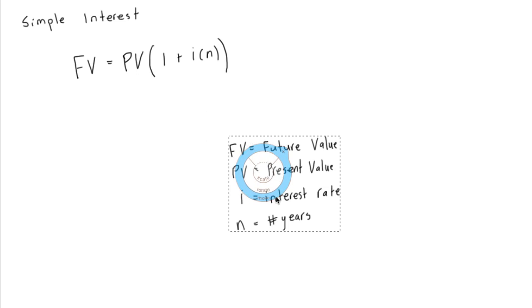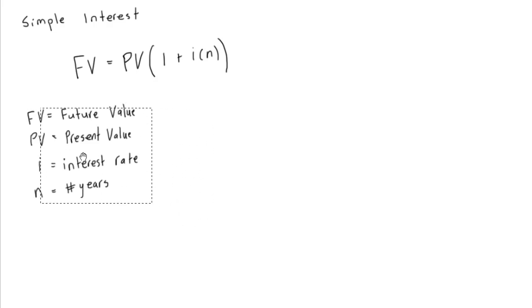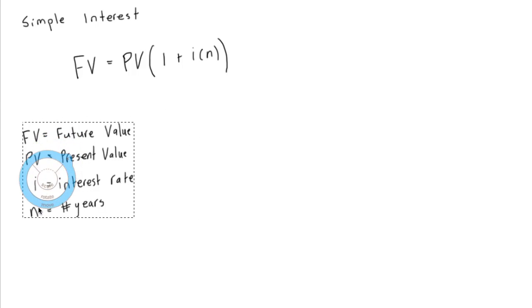I have that written down right here, so that's what FV, PV, i, and N are.